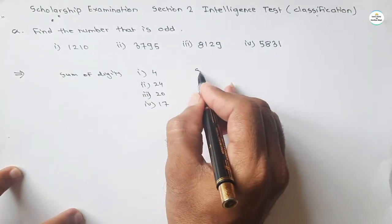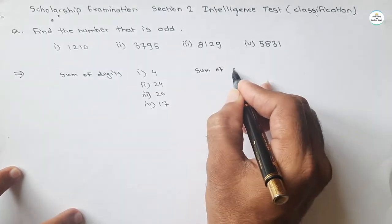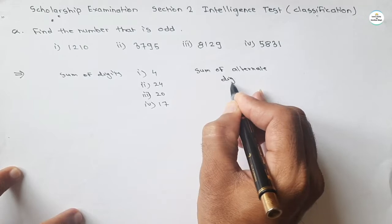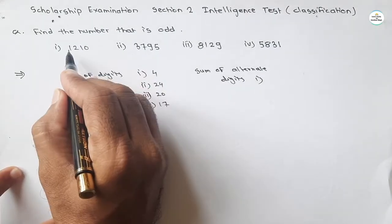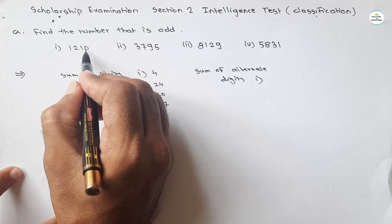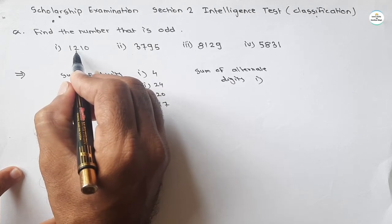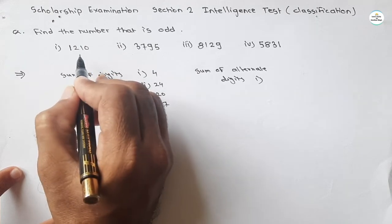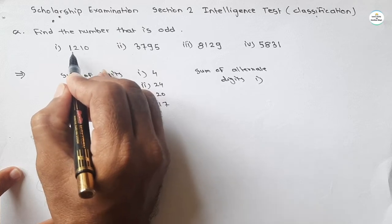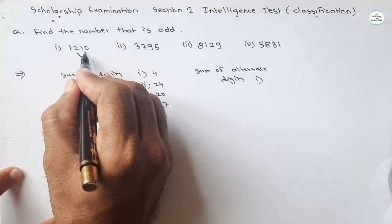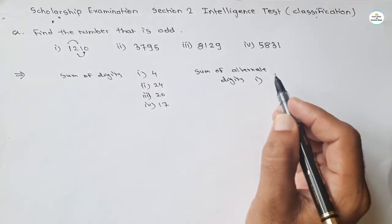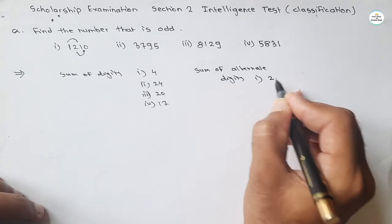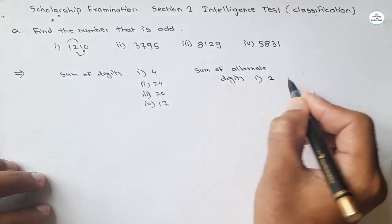Now take the sum of alternate digits. Alternate digits. For first one, alternate digits means unit place, then 100 place, like this. 10 place, then 1000 place. So sum of these alternate places, 2 plus 0 and 1 plus 1. You can see sum of digits is 2 for unit place also and for 10 place also.